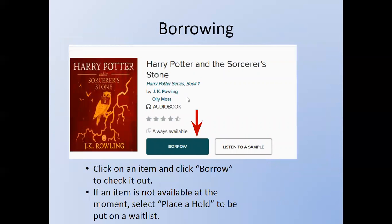When you've found an item you want to check out, just click on the item and then click Borrow to check it out. If the item is not available at the moment, select Place a Hold to be put on a waitlist.